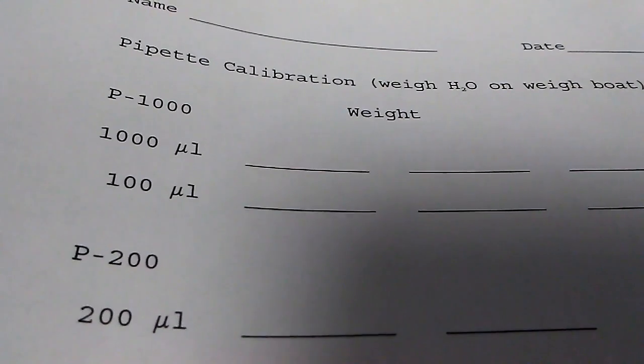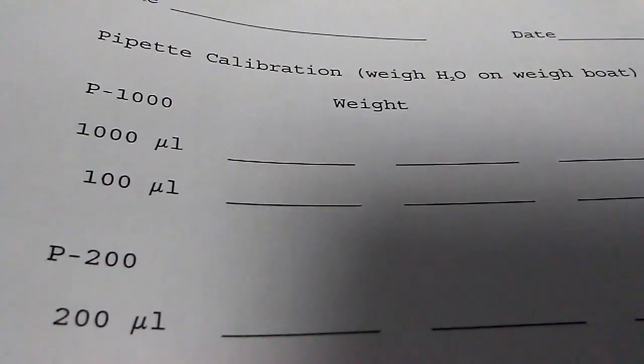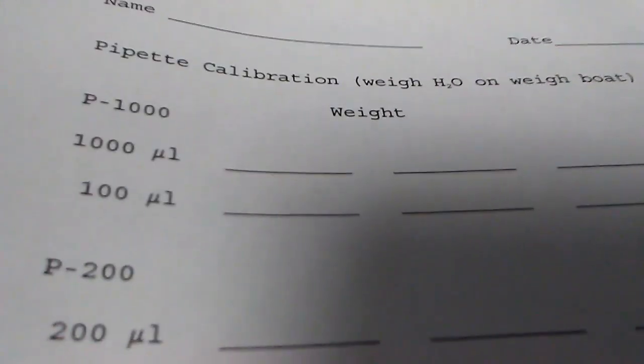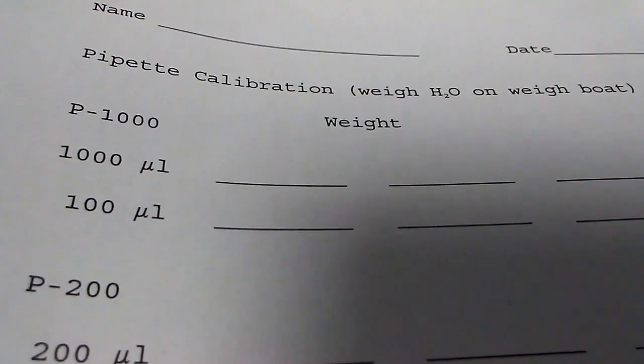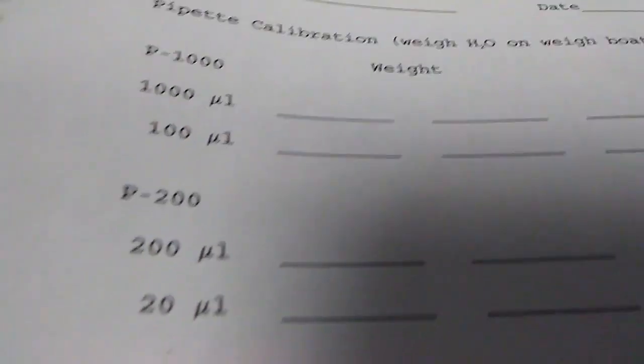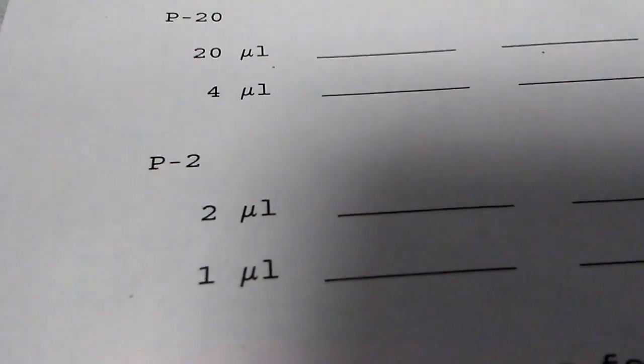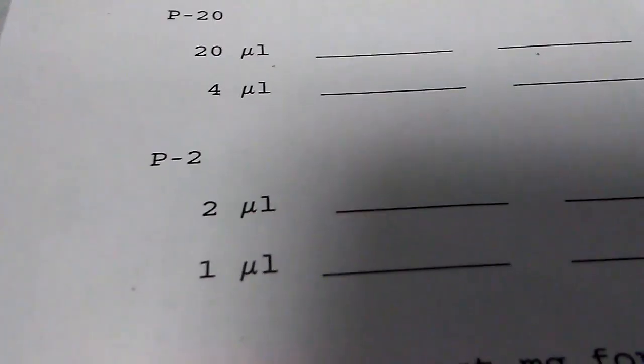So I've made up a calibration chart with the volume: 1,000 and 100 microliters for a P1000, 200 and 20 microliters for the P200, 20 and 4 microliters for the P20, and 2 and 1 microliters for the P2. The nice thing about this test is that it's simple enough that you can just assign each person in the lab to check their own pipettes.